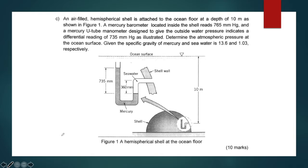An airfield hemispherical shell is attached to the ocean floor at a depth of 10 meters as shown in the figure. A Mercury barometer located inside the shell reads 765 mmHg, and a Mercury U-tube manometer designed to give the outside water pressure indicates a differential reading of 735 mmHg as illustrated. Determine the atmospheric pressure at the ocean surface, given the specific gravity of Mercury and sea water is 13.6 and 1.03 respectively.